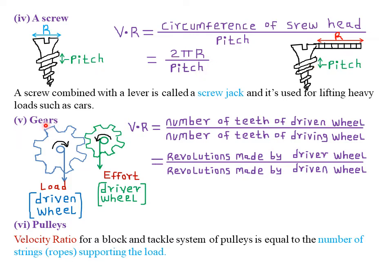The other type of simple machine is what we call gears. A gear usually has a driver wheel and a driven wheel. To understand this better, consider a bicycle. A bicycle has a small part where the pedals are attached — we call it the sprocket wheel. Sprocket is spelled S-P-R-O-C-K-E-T.